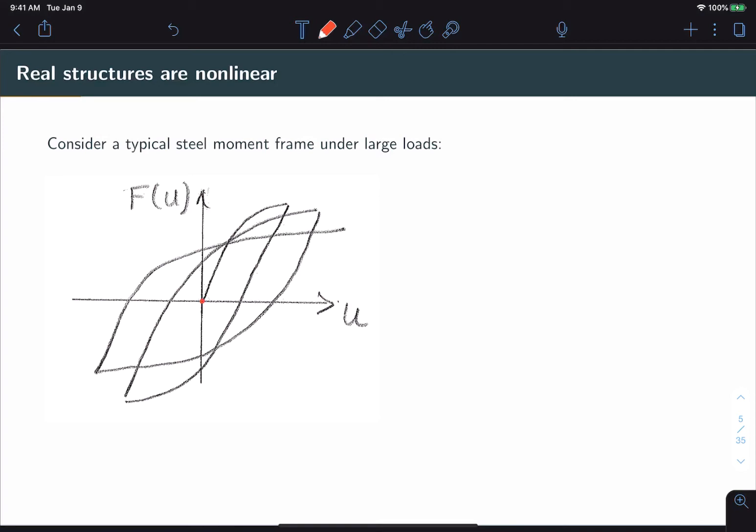You may have linear deformation to a certain point, then the structure goes plastic, returns along a linear response curve, becomes plastic again, and so on. You get this hysteresis loop. We have no way to deal with that so far. What we'd like is a way where we can introduce nonlinear responses and be able to solve for them.